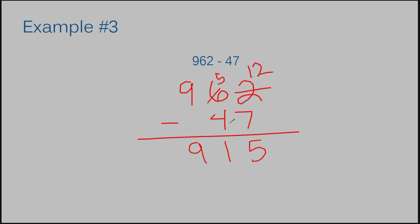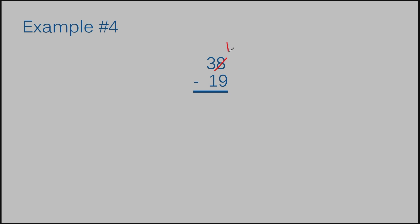Let's move on to example number 4. The numbers are already lined up for us, so all we need to do is make sure we get our regrouping right. I have 8 and I need to take 9 away — I cannot do that. So I have to cross out my 8 and add a 1 to it, which we borrow from the next column. This 3 turns into a 2. Now I have 18 and I need to take 9 away — I get 9. Then I have 2 and I take 1 away — I get 1. The answer to example number 4 is 19.